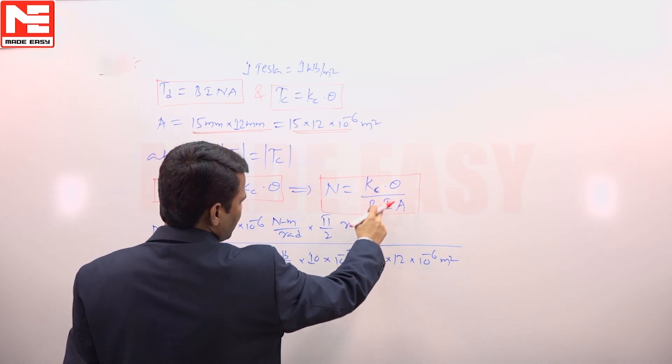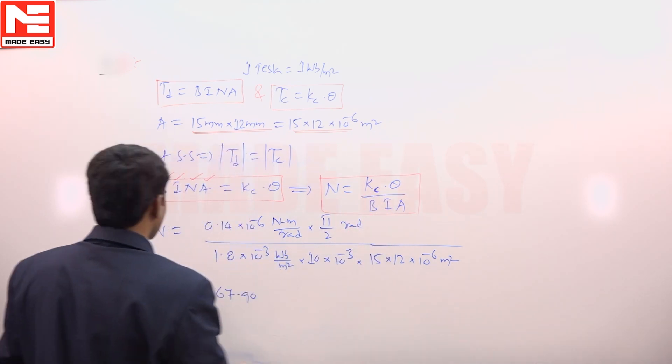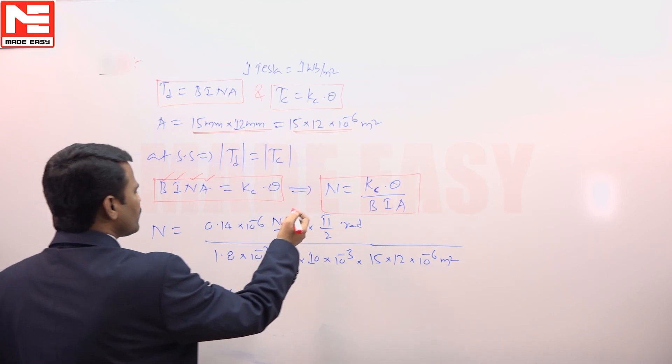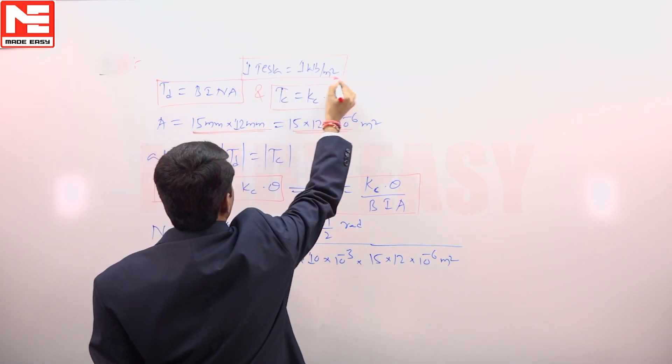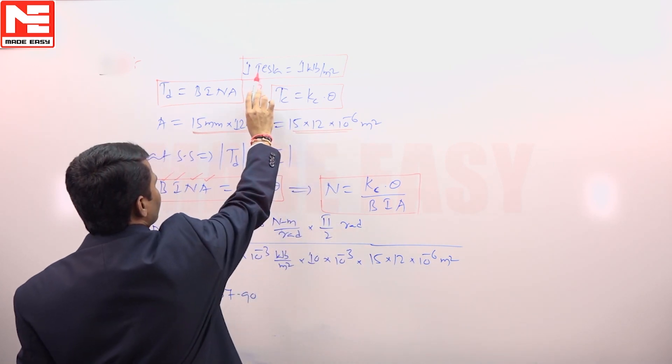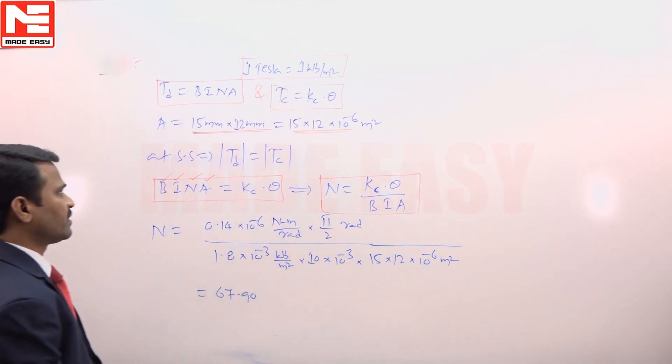N is equal to Kc into theta upon B I A. Usually B magnetic flux density is expressed in Tesla, but 1 Tesla is equal to 1 Weber per meter square.